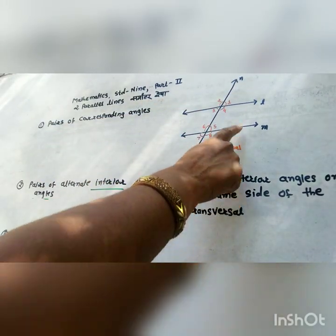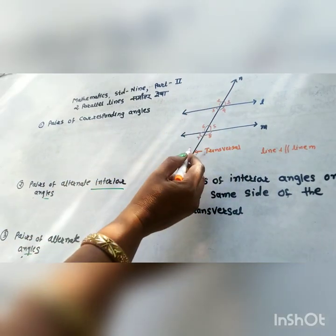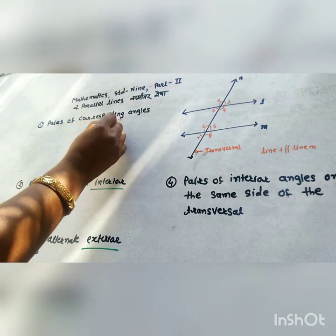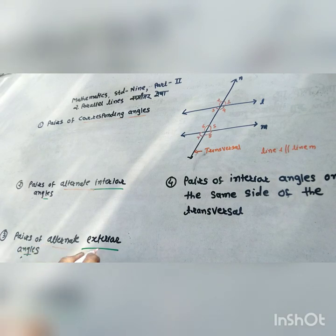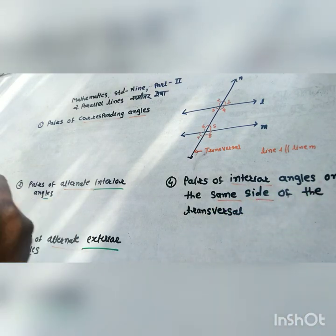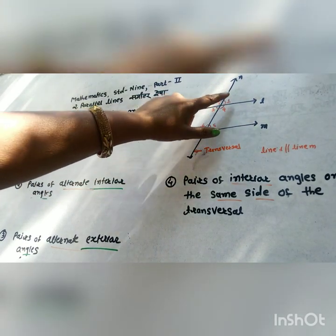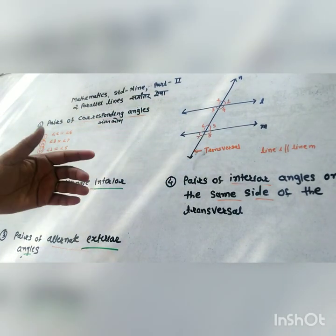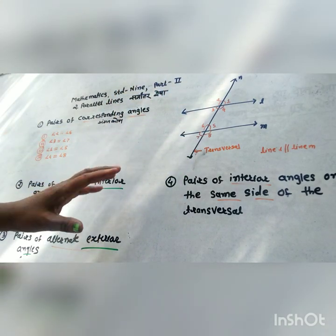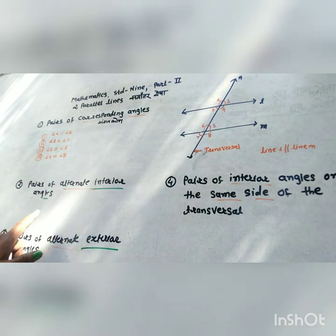Line N is the transversal of lines L and M, where L and M are parallel lines. Due to this transversal, 8 angles are formed: 1, 2, 3, 4, 5, 6, 7, and 8. Since the lines are parallel, pairs of corresponding angles are congruent: angle 2 equals angle 6, angle 3 equals angle 7, angle 1 equals angle 5, and angle 4 equals angle 8.